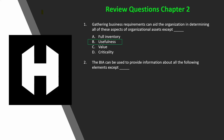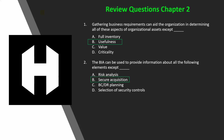Question 2: The business impact analysis can be used to provide information about all of the following elements except for: A) risk analysis, B) secure acquisition, C) business continuity/disaster recovery planning, or D) selection of security controls. If you said B, secure acquisition, you would be right. The BIA gathers asset valuation information beneficial for risk analysis and selection of security controls.